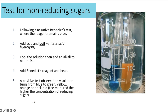To test for a non-reducing sugar such as sucrose, first perform the Benedict's test — if the sample remains blue, proceed to the next steps. Add acid and boil (it must be boiling hot) to hydrolyse sucrose into fructose and glucose. Then cool the solution, add an alkali to neutralise, then add Benedict's reagent and heat. You should get a colour change — typically orange or brick red — because hydrolysing the disaccharide into monosaccharides doubles the sugar concentration.